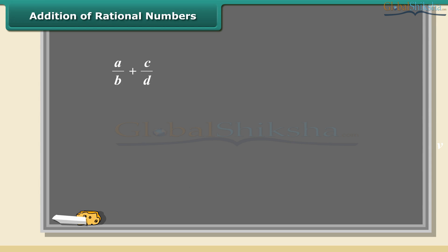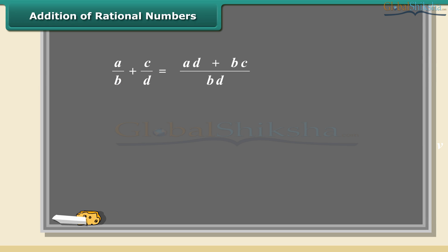How to add rational numbers? It's easy! Before we add, keep in mind the rational numbers should have the same bottom number — that is, both rational numbers must have a common denominator. The easiest way to do this is to multiply both parts of each number by the bottom part of the other.